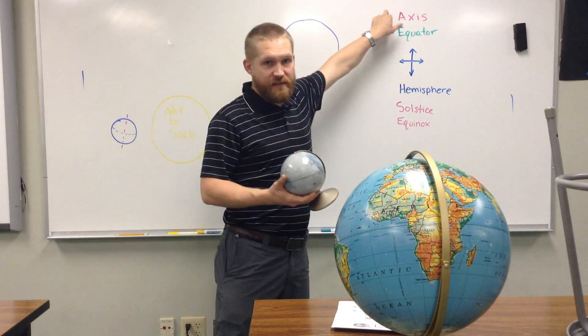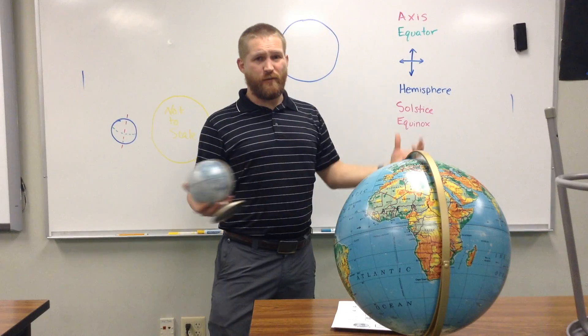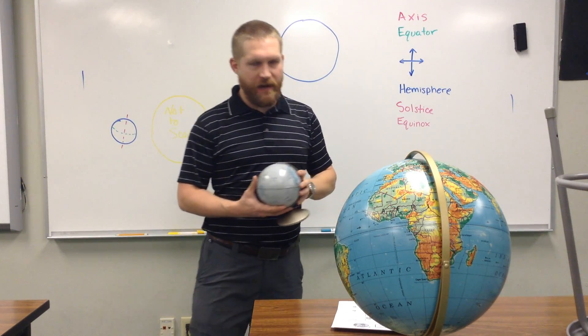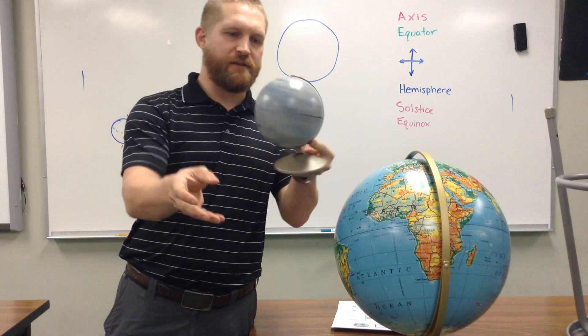First word I want to talk about is axis. What is an axis? These are all the words you need to understand to understand why we have seasons. So, an axis, if I spin something, there's a central point that it spins around.